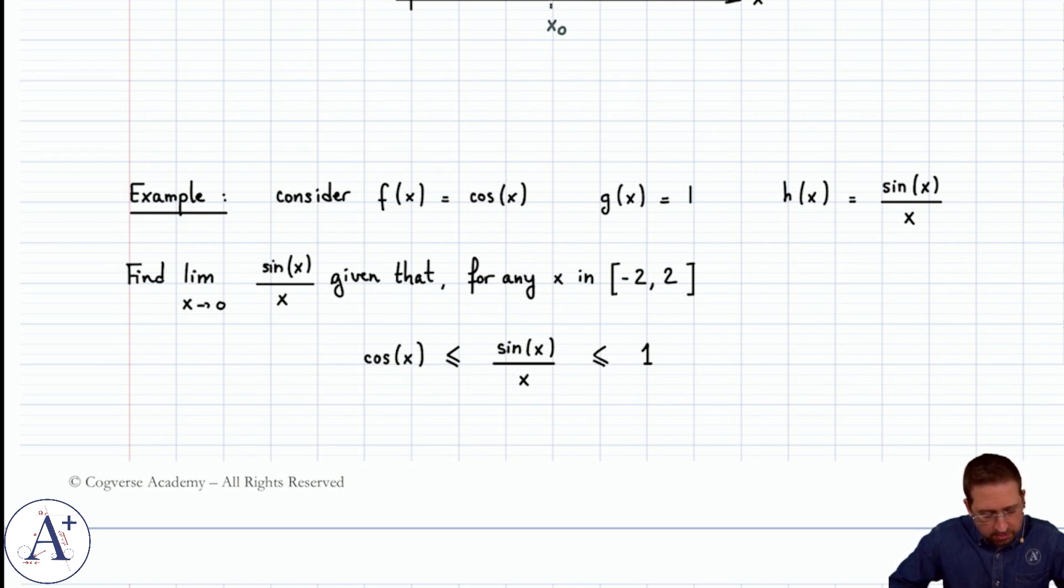We would like to find the limit of sin(x)/x, given that for any x in the interval (-2, 2), cos(x) ≤ sin(x)/x ≤ 1. So the functions are arranged such that h is bounded by cos(x) and 1.